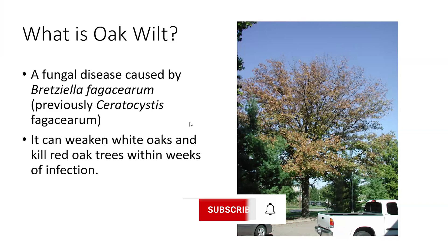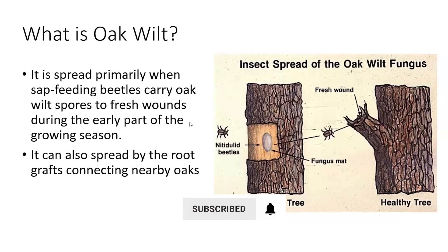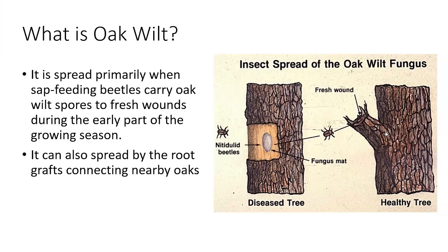Oak wilt is spread primarily by sap-feeding beetles, shown here in this photo. The beetles carry fungal spores from tree to tree, and once they land on a fresh wound, those spores germinate and penetrate into the tree, beginning colonization. Those insects are very active early in the growing season, which makes that period very critical to avoid trimming the tree.